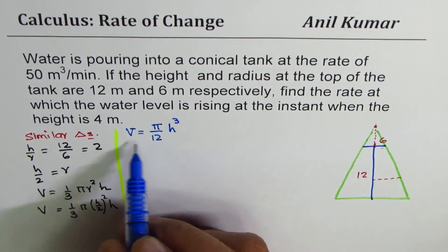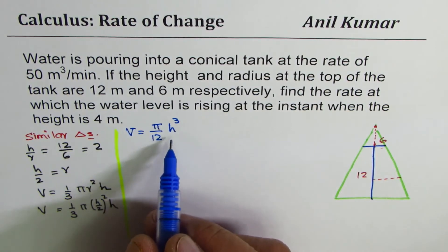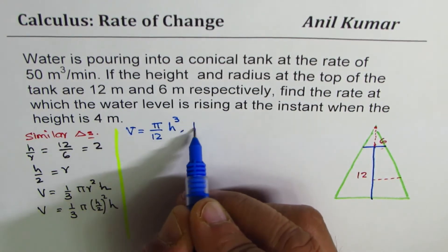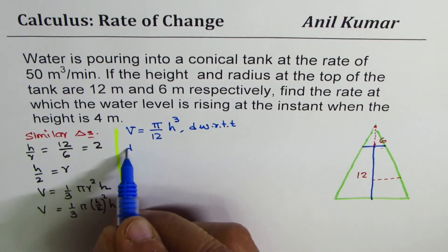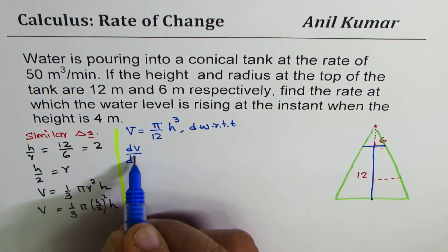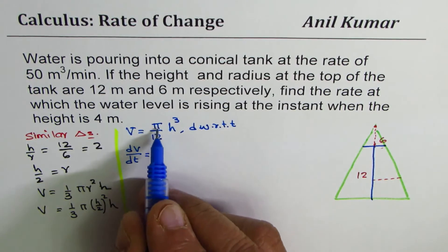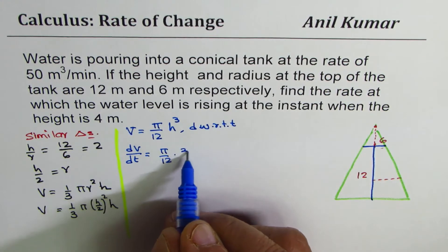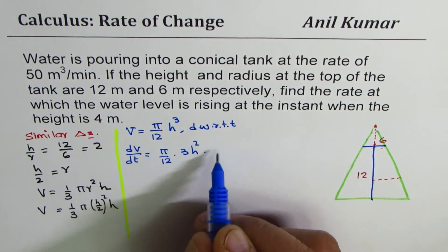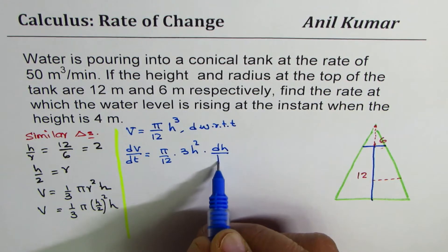Now, let's find rate of change with respect to time. So if I differentiate with respect to time, I get dv dt equals, that is a constant pi over 12 times 3h square, 3h square, dh dt.